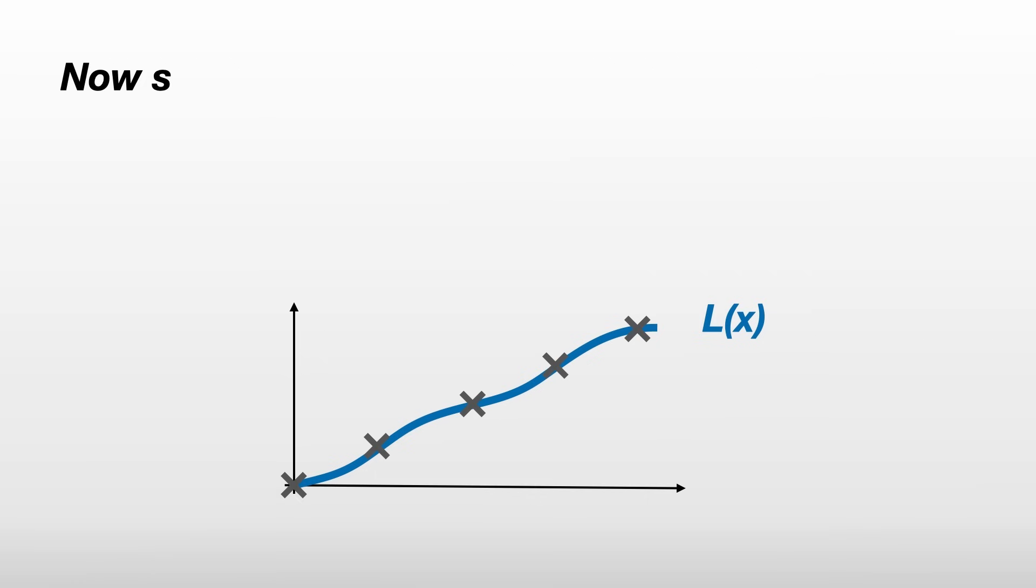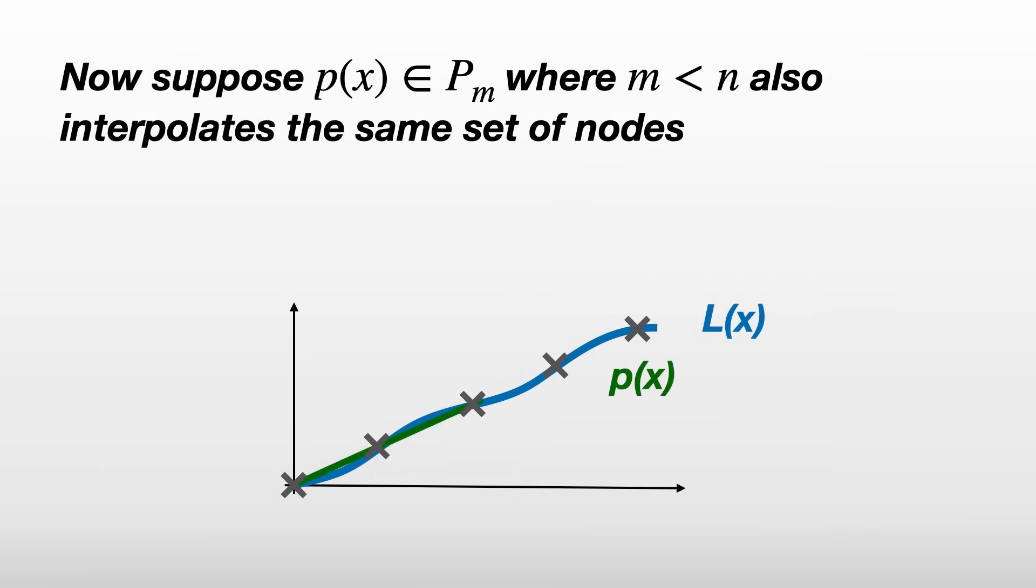Now suppose there's another polynomial p(x) which is in P_m where m is less than n. So it's a lower order polynomial, but it just happens to also interpolate the same set of nodes. This changes everything. Let me explain.